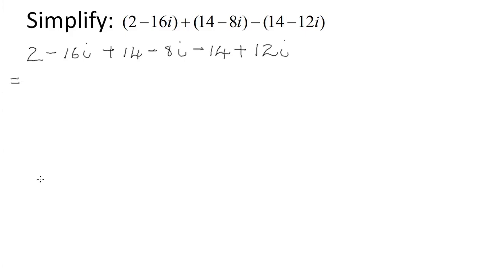Then just add or subtract all your real parts: 2 plus 14 minus 14 gives you 2. Then your imaginary parts: −16 minus 8 gives you −24, and then +12 gives you −12i. So the answer is 2 − 12i.